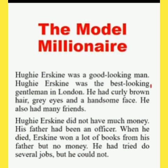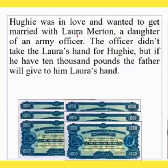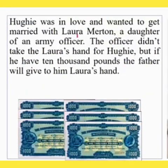Hugh was in love and wanted to get married with Laura Martin, the daughter of an army officer. The officer did not give Laura's hand to him. If Hugh had 10,000 pounds, the father — Colonel Martin — would give him Laura's hand. Two new characters are introduced here: Laura Martin and Colonel Martin, her father the army officer.